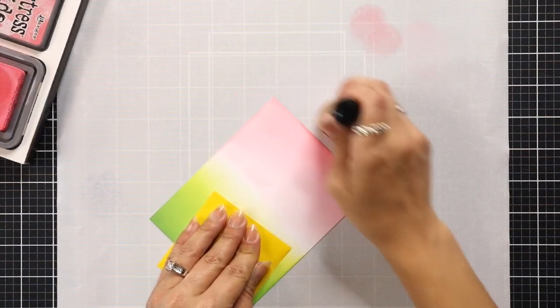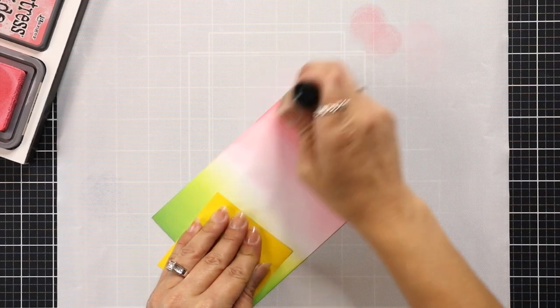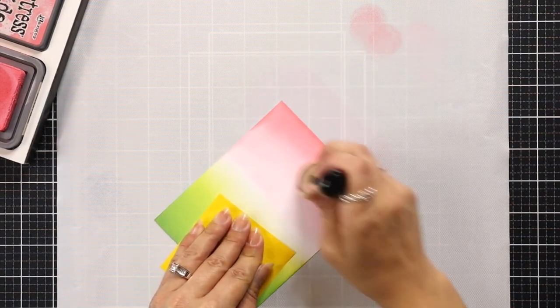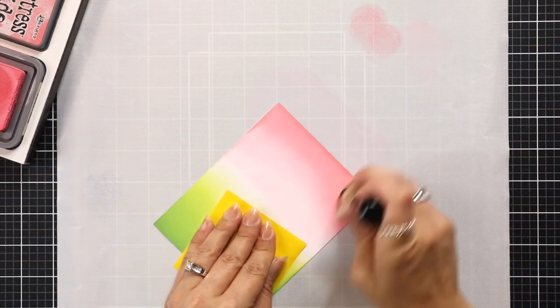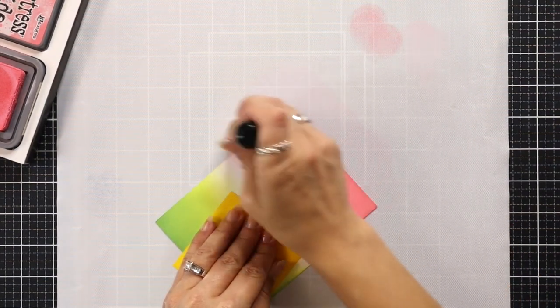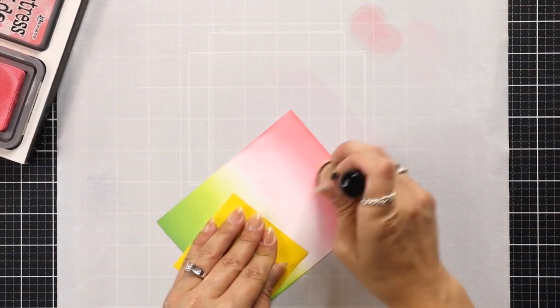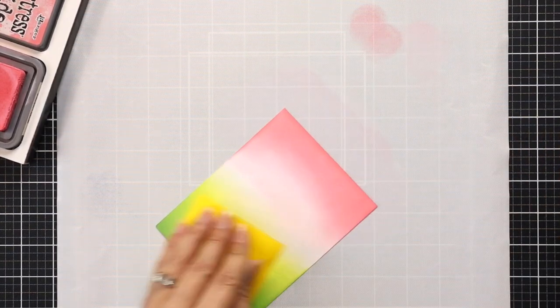Then I'm going to come in with Worn Lipstick starting on that end. And as you layer this color up, it's a lot easier to blend. Oxides are really good for blending to begin with, but when your ink is wet like this or the more ink you add to the cardstock, it really does get a lot easier to blend.